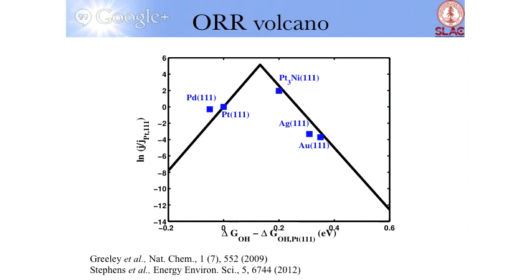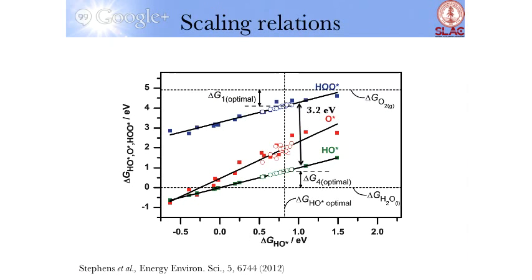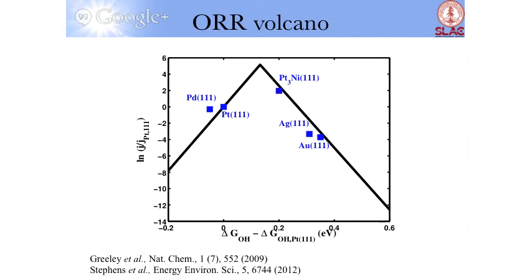And you can take this picture and then construct a data analysis to ask which step would be limiting. And then you get these two legs of an oxygen reduction activity volcano.